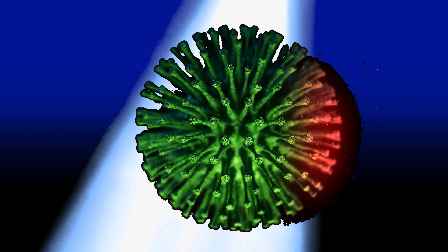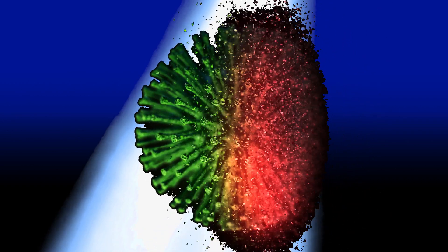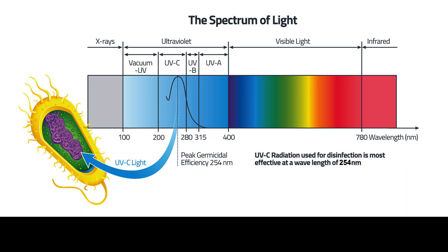The UVC spectrum, which ranges from 200 nanometers to 280 nanometers, is responsible for the germicidal properties of UV light.